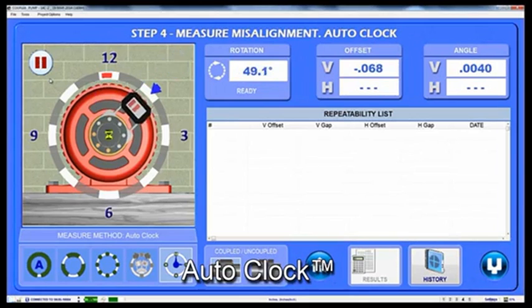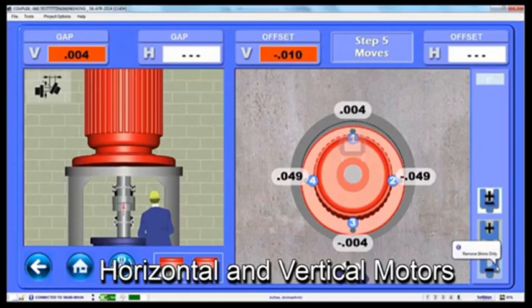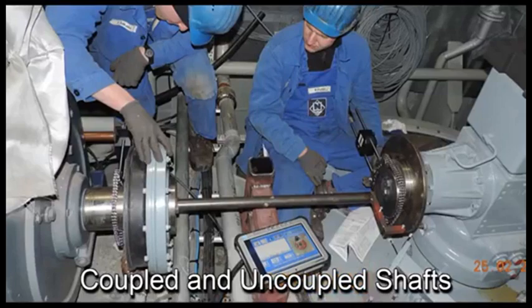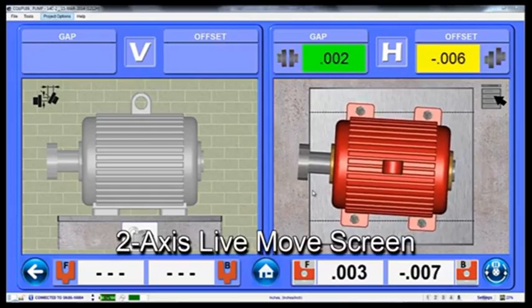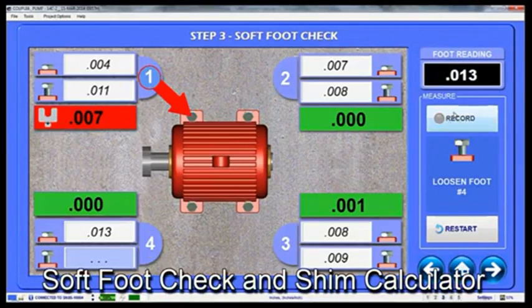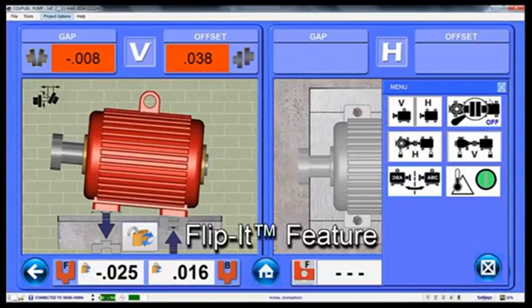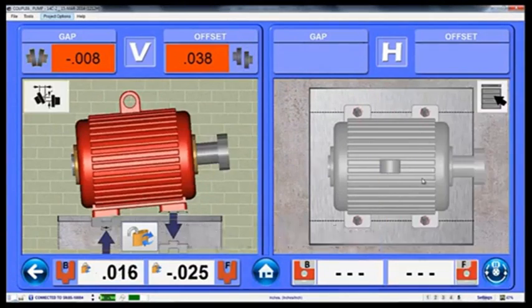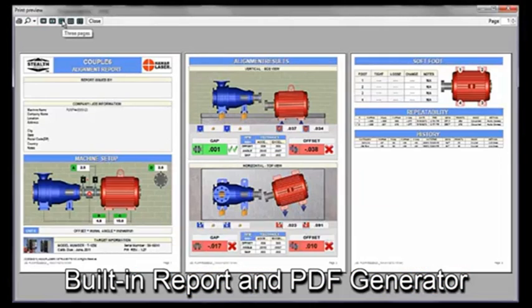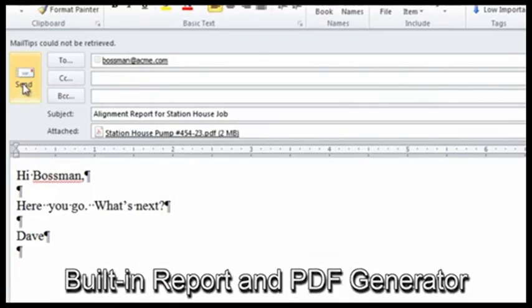auto clock for taking up to 8 data points, horizontal and vertical motors, coupled and uncoupled shafts, 2-axis live move screen, software check and shim calculator, thermal growth targets, flip it feature for changing the motor view, built-in report generator and PDF format for emailing reports.